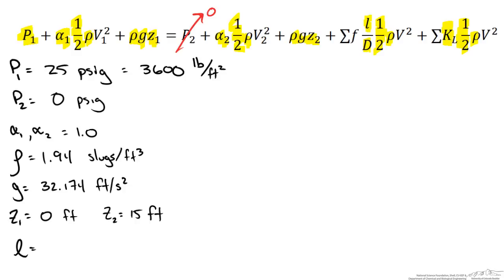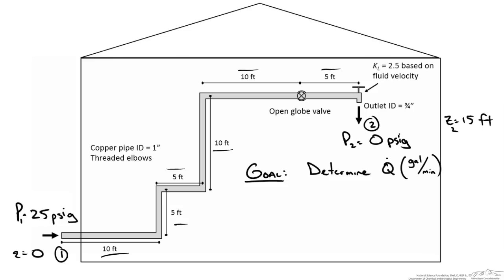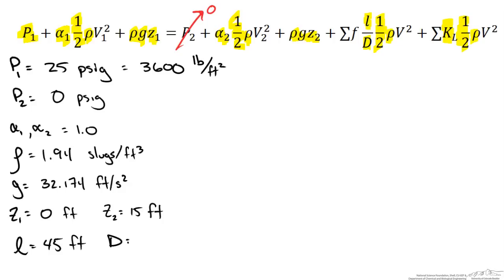So let us go to determine the length of our pipe network. So we have a total of 45 feet of pipe. We also know the diameter is 0.0833 feet. The last thing we said we would calculate is our loss coefficients. So let us go take a look at our schematic and figure out what we need to look up.